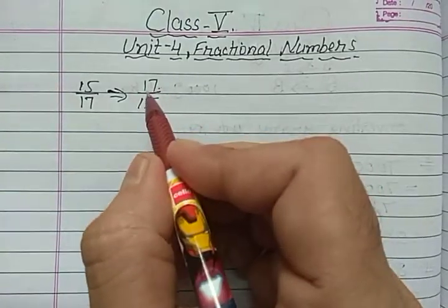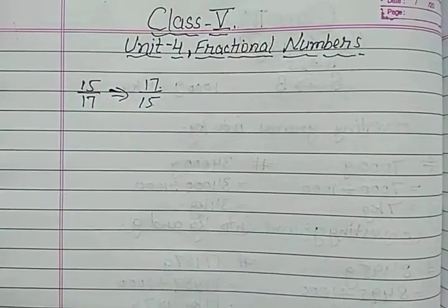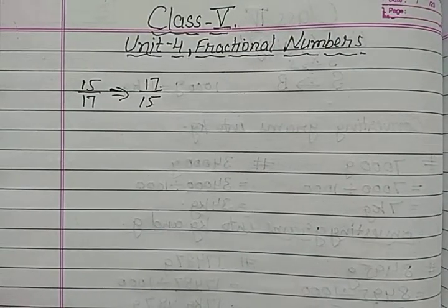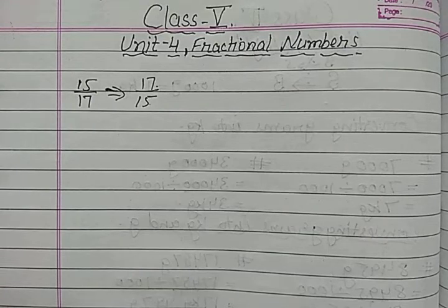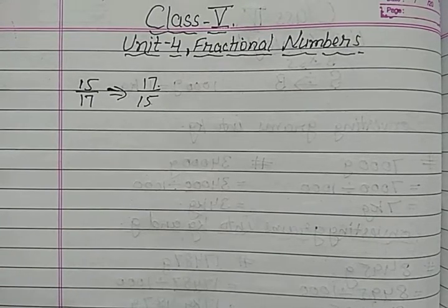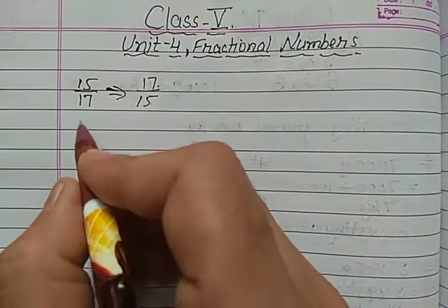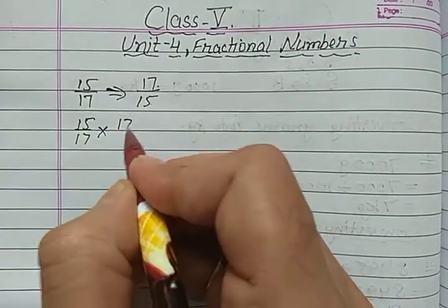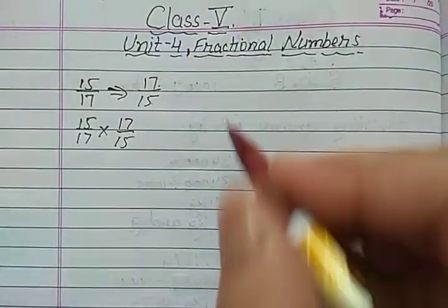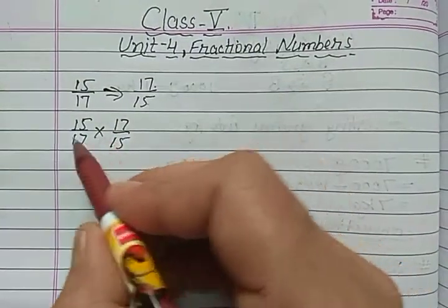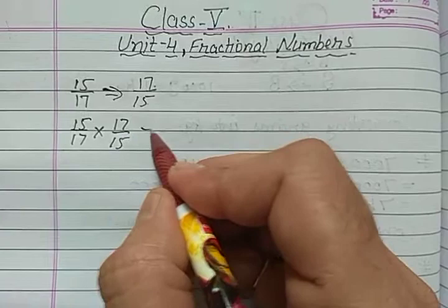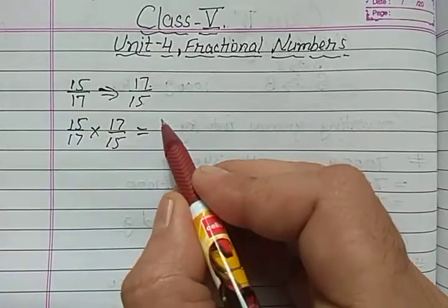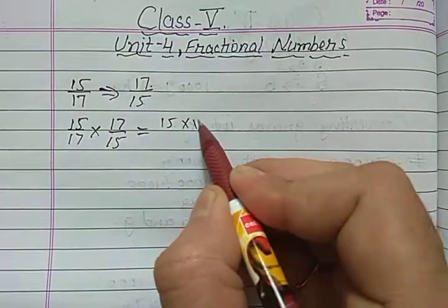So this is the reciprocal of the given fraction. We have also learned that when we multiply reciprocals, the product is 1. Suppose we want to multiply the given fraction with its reciprocal, which is 17 upon 15. Whenever we multiply reciprocals, the product is always 1. We multiply numerator with numerator and denominator with denominator.